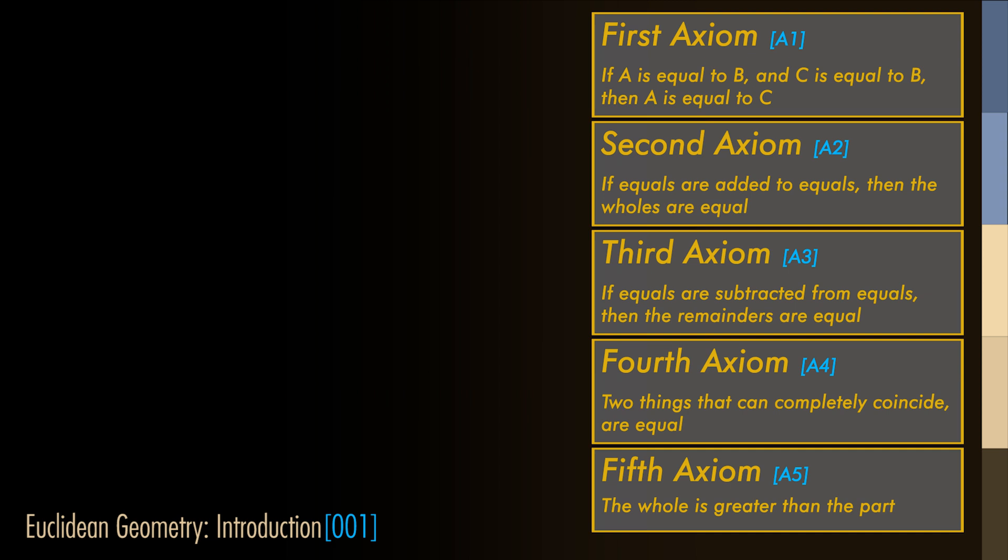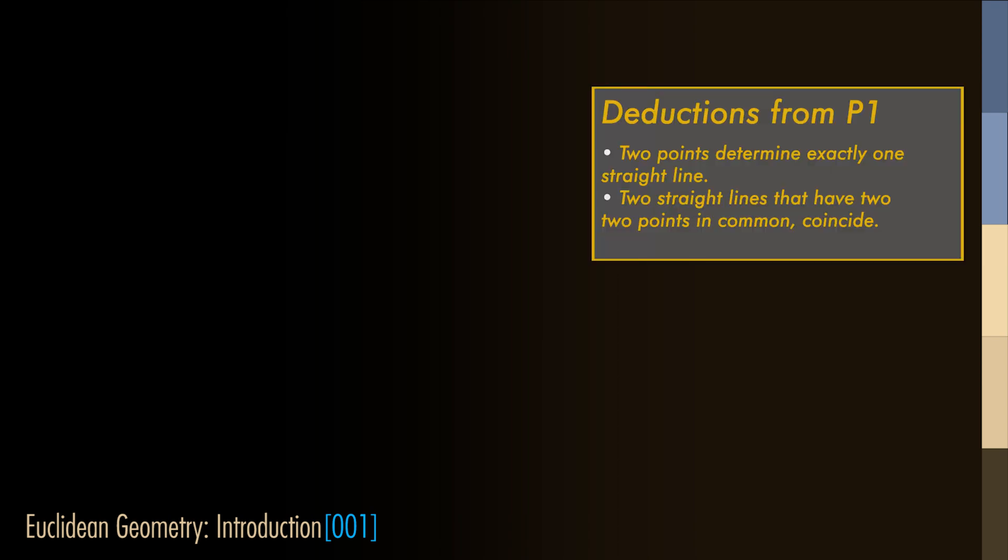So, through these notions, immediate deductions can be made using the postulates. Through these notions, the first postulate can be stated as: Two points determine exactly one straight line. Or in other words, two straight lines coincide completely if they have two points in common.